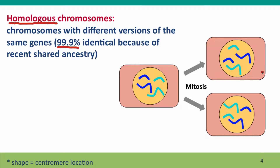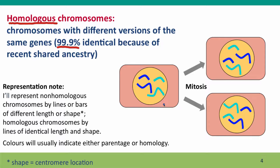Here's a cell undergoing mitosis, with the chromosomes drawn. I'm using these chromosomes to show the representation I'll be using for the rest of this module when talking about chromosomes. Chromosomes I want you to see as homologous are represented as the same size and the same shape. These two chromosomes are meant to be seen as homologous, and these two as well. These two chromosomes are not homologous — they're drawn with different lengths and different shapes. I've also used color coding to indicate parentage: dark blue for chromosomes from one parent (dad), and light blue for chromosomes from the other parent (mom).